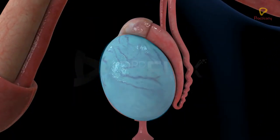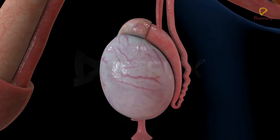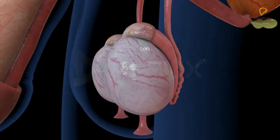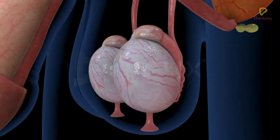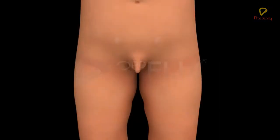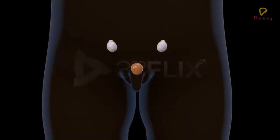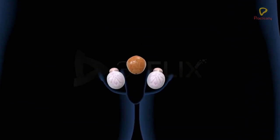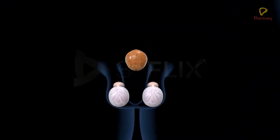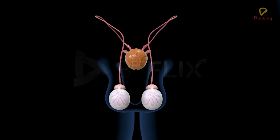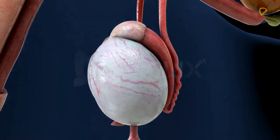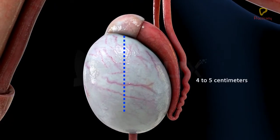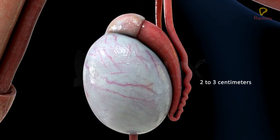Testes. The testes, or testicles, are a pair of oval-shaped pinkish structures. They develop in the abdominal region in the embryonic stage, but are extra-abdominal in position in adults. Each testis measures 4-5 cm in length and 2-3 cm in width.